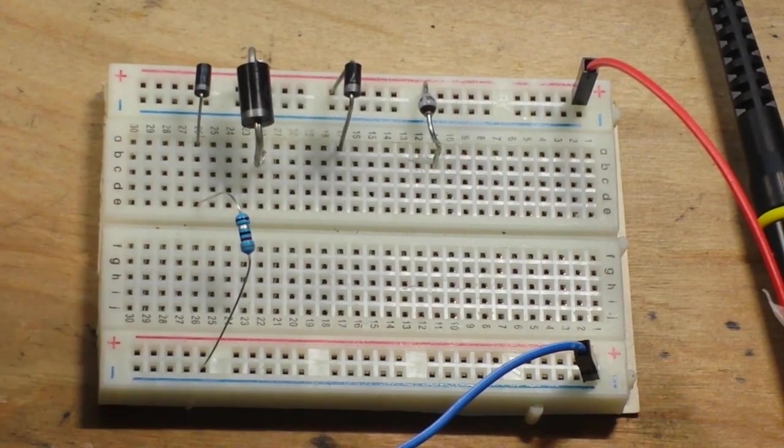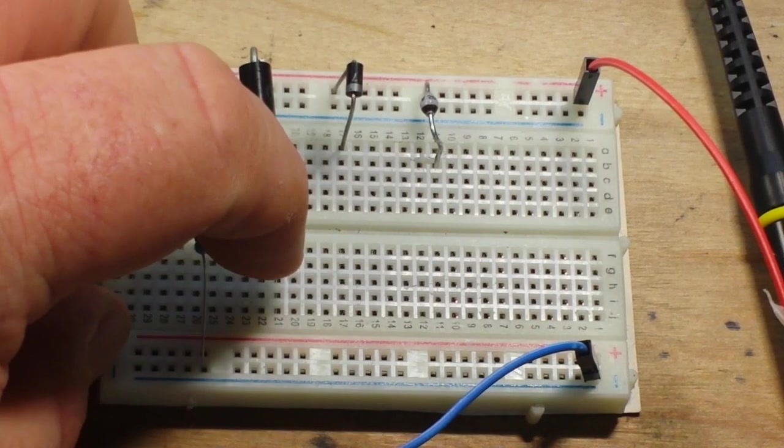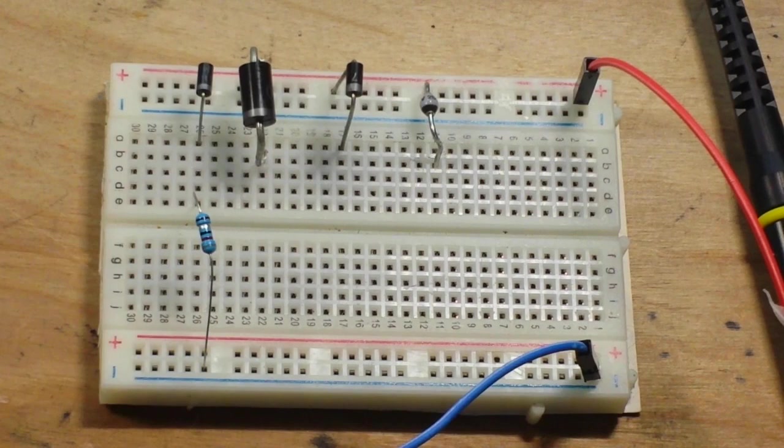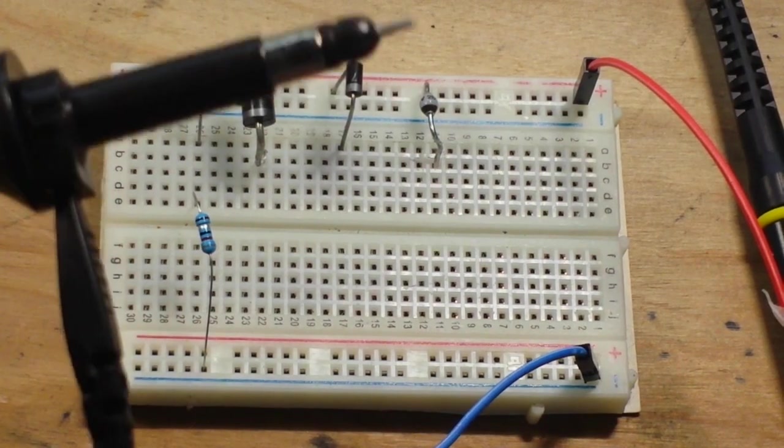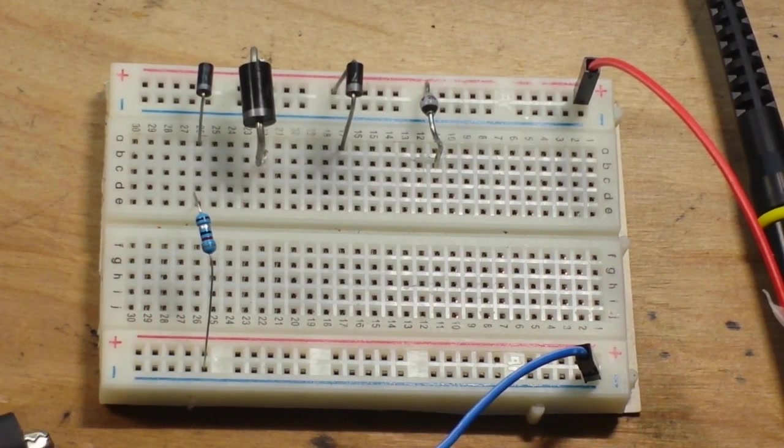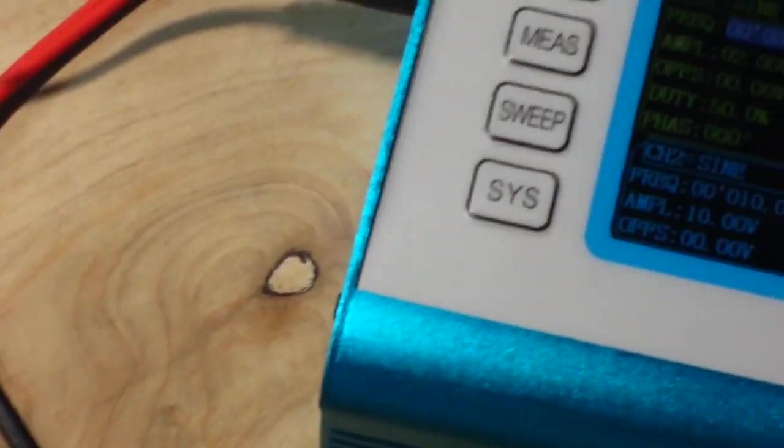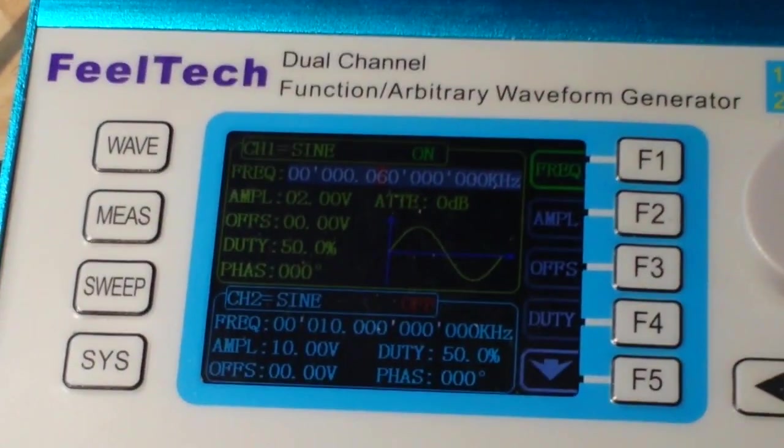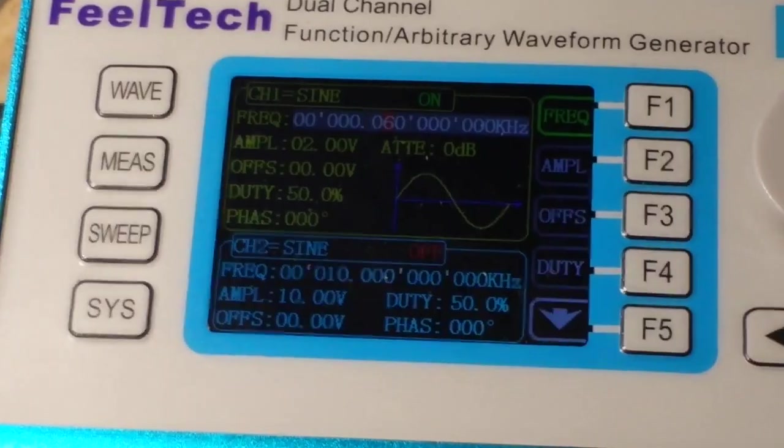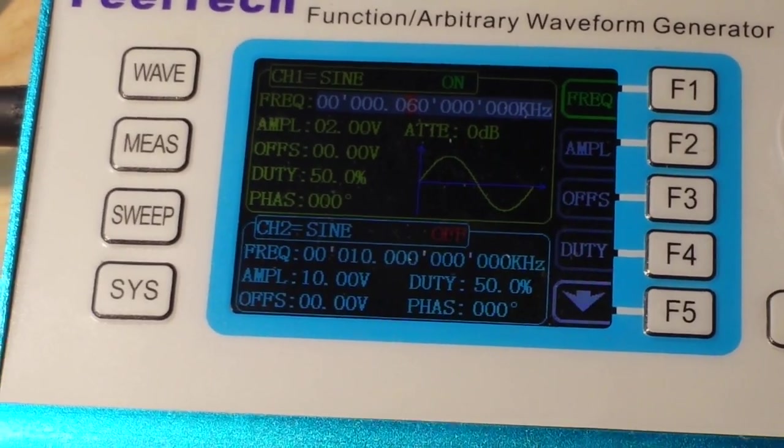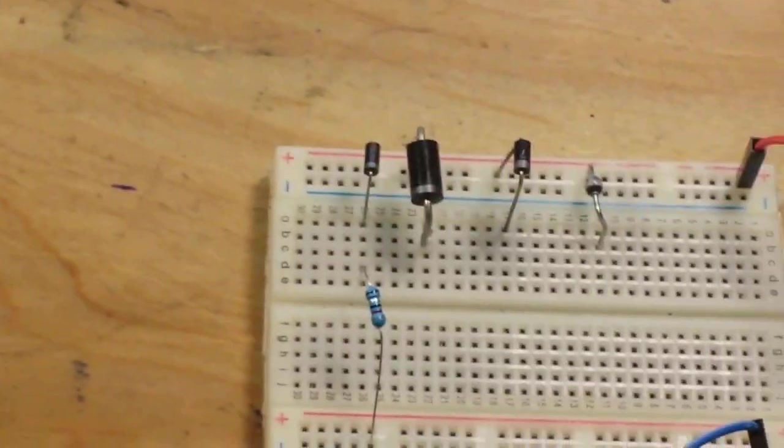So for our setup, we're just going to do single diode rectification. I've got a 10K resistor here. We're going to probe with the oscilloscope and we're going to watch what happens. Over here is my function generator. Right now we're putting a 60 hertz, 2 volt peak to peak sine wave into our test setup.